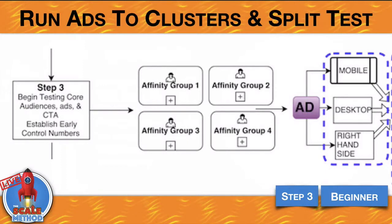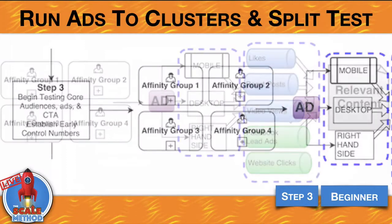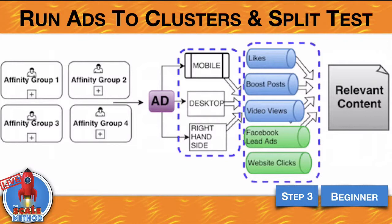Once you have your four distinct affinity groups, begin by testing your core audience and your affinity audiences, and test what your call to action is. Establish early control numbers. We're going to test four different groups and run an ad. The blue line around mobile, desktop, and right-hand side means we're running a content ad — to a blog, a video, or a post. We want to find out how much it costs to get a like, a boosted post, or a video view on mobile, desktop, or right-hand side, and establish our average cost per like, cost per boost post, and cost per video view for each placement.